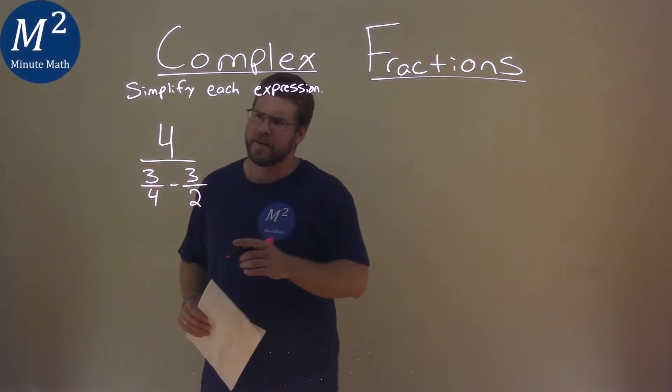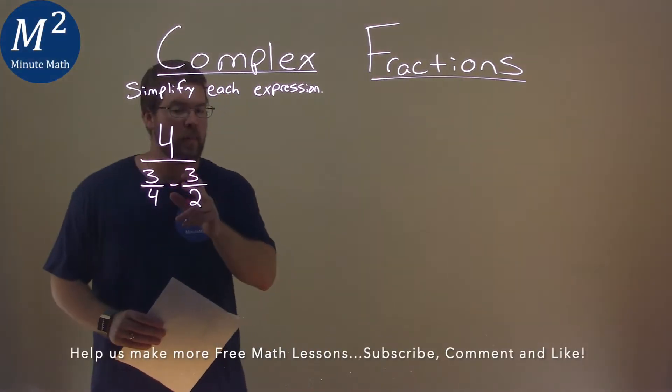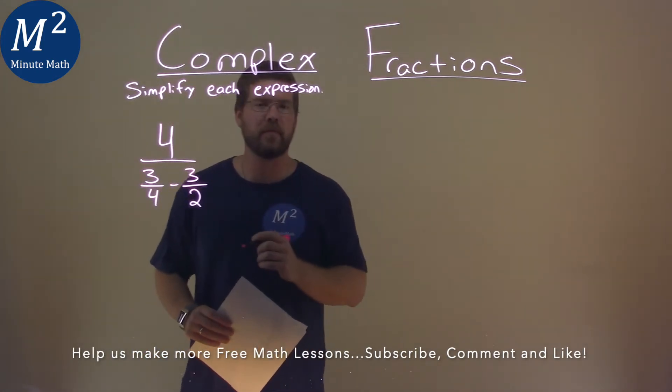We're given this problem right here: 4 over 3 fourths minus 3 halves, and we have to simplify this expression.